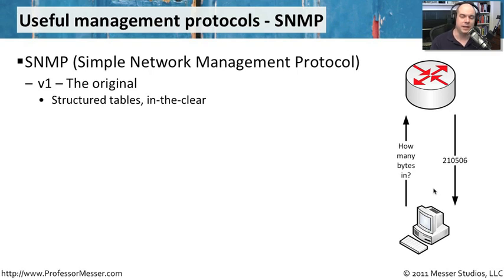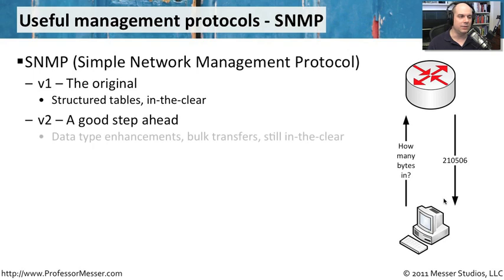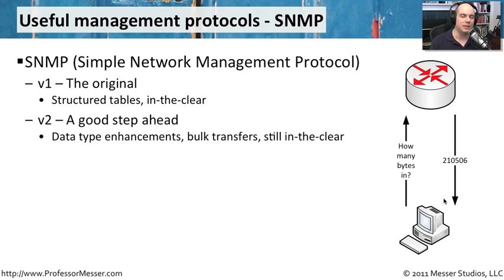SNMP queries can be done across many different variables — many routers have hundreds or thousands of SNMP variables you could query, such as the temperature inside a server or how many people are connected to a device. There are three versions of SNMP. Version 1 is the original, and the entire communication is completely in the clear — not encrypted, not verified, and anyone on the network between those two devices can see exactly what's happening. In version 2, data type enhancements were added and you can request many metrics at once for a bulk response, but there was still no encryption and still a real security concern.